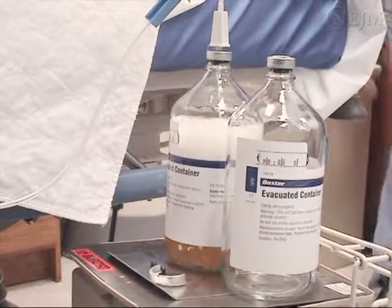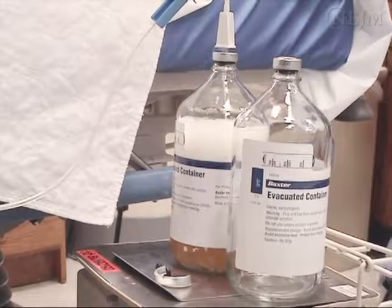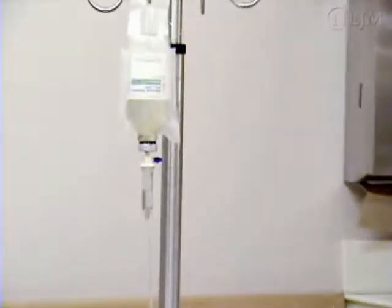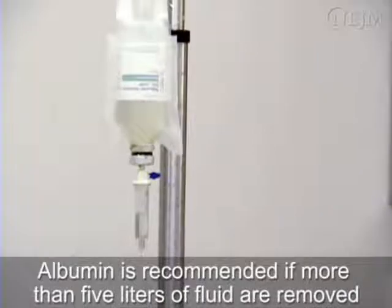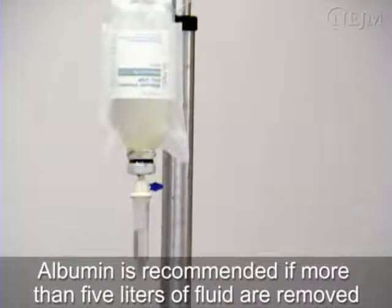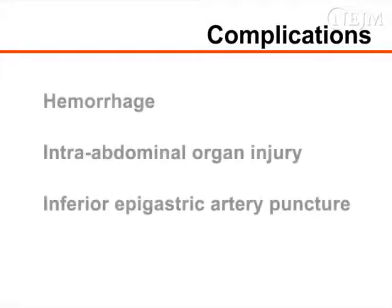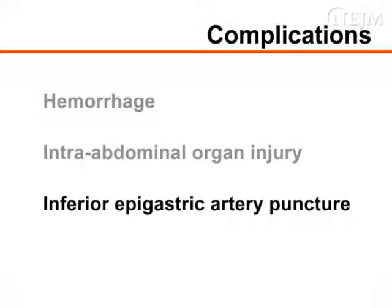Post-paracentesis circulatory dysfunction may occur after large-volume paracentesis and may lead to hypotension, hyponatremia, renal failure, and shortened survival. Although the use of albumin as a plasma expander is controversial, its use is recommended if more than 5 liters of fluid have been removed. Other complications of paracentesis include localized infection, abdominal wall hematomas, and persistent ascites fluid leak. More serious complications are rare and include hemorrhage, intra-abdominal organ injury, and inferior epigastric artery puncture.